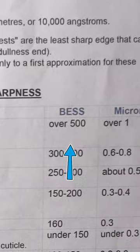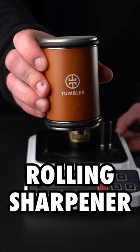Anything scoring over 500 falls into the dull category. Now I'm going to resharpen it using the tumbler rolling sharpener.